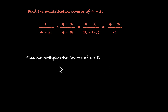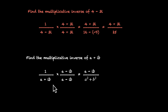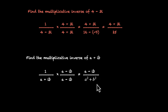To generalize: the multiplicative inverse of any complex number a+bi is 1/(a+bi). Rationalizing by multiplying with (a−bi)/(a−bi) gives (a−bi)/(a²−(bi)²). Since i²=−1, the denominator becomes a²+b². So the multiplicative inverse of a+bi is (a−bi)/(a²+b²). In other words, replace a+bi with a−bi in the numerator and divide by a²+b².